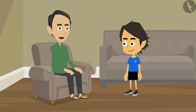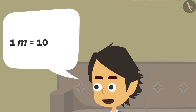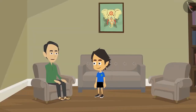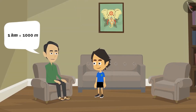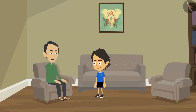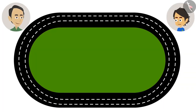First, tell me, how many centimeters are there in a meter? There are 100 centimeters in a meter. Similarly, there are 1000 meters in a kilometer. Then a thousand meters is a lot. Yes, much more than the meter. Our school sports competition had a 1000 meters race. So the people who participated in it ran one kilometer? Yes.